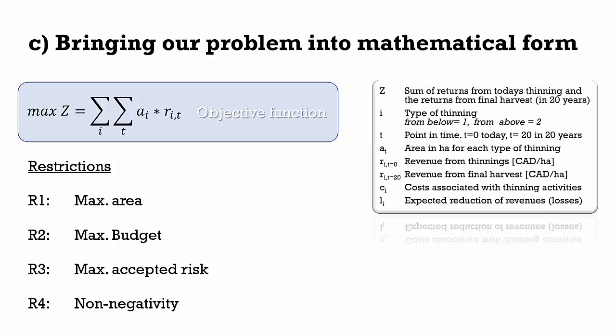After bringing our objective function into mathematical form, let's have a look at the restrictions. First, we have a maximum area available: the sum of all areas must be less than or equal to 10 hectares. Our second restriction is the maximum budget: the costs for all activities must be less than or equal to 11,500 dollars. We multiply the area of each thinning type by its corresponding cost per hectare and sum the two together.